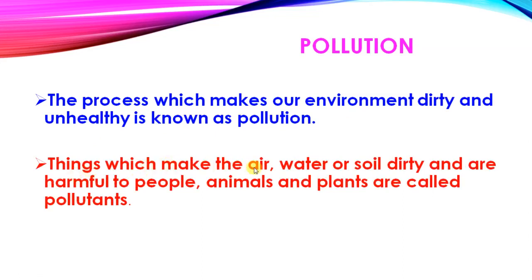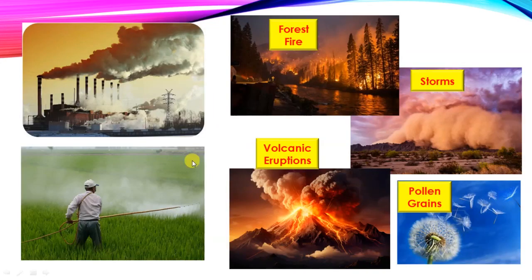Things which make the air, water, or soil dirty and are harmful to people, animals, and plants are called pollutants. Keep in mind the difference between pollution and pollutants. Pollution is caused by human activities, but natural causes exist too — such as forest fires, volcanic eruptions, storms, and pollen grains.